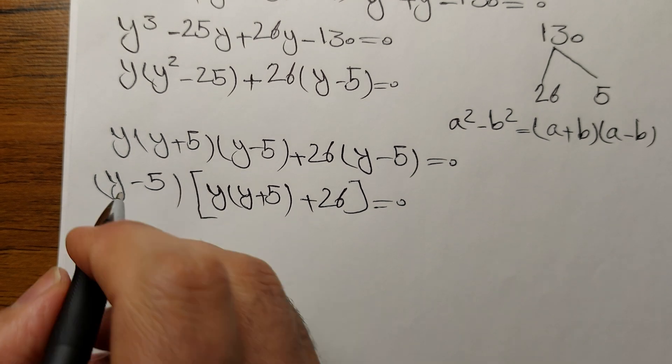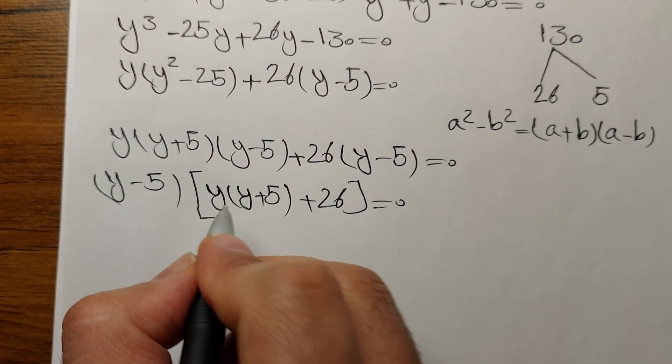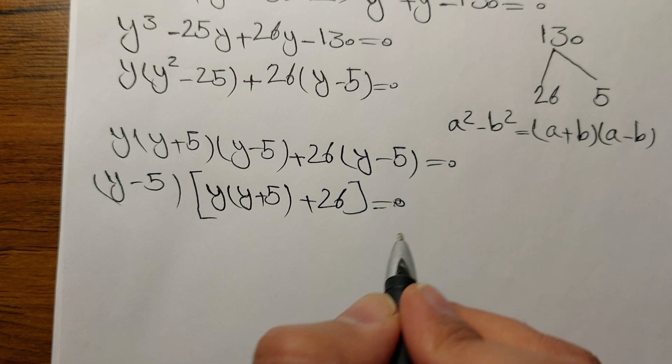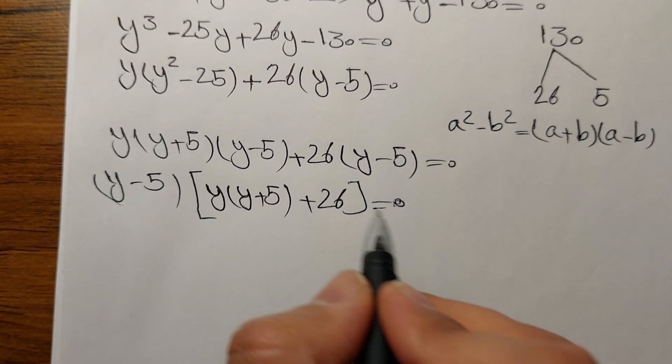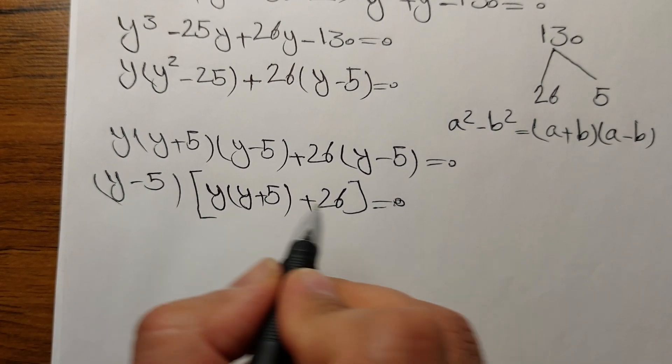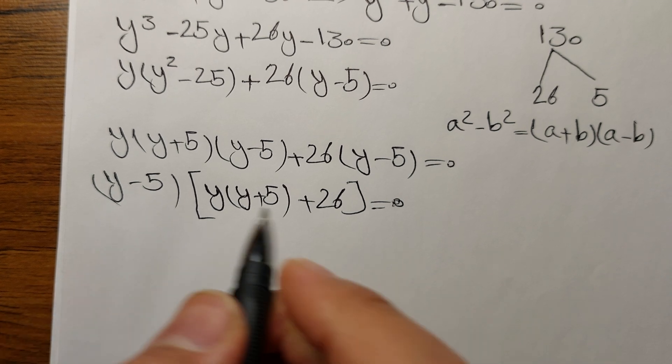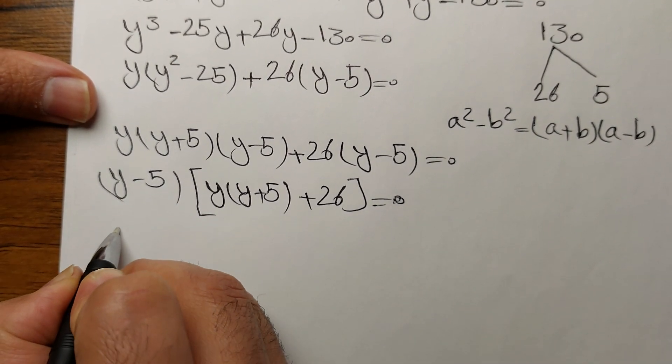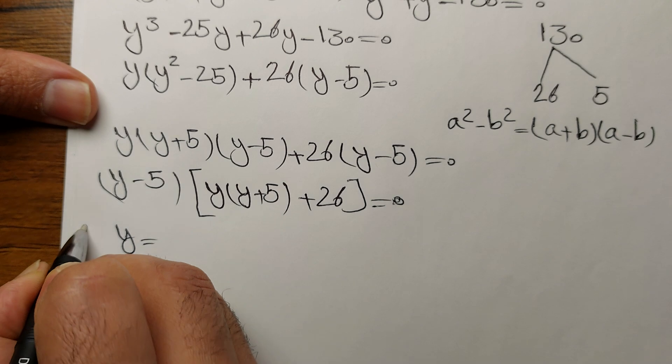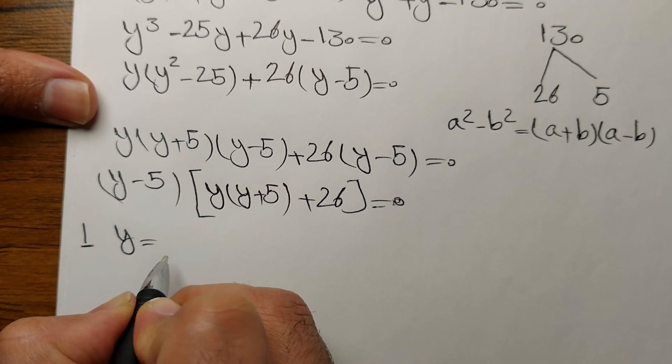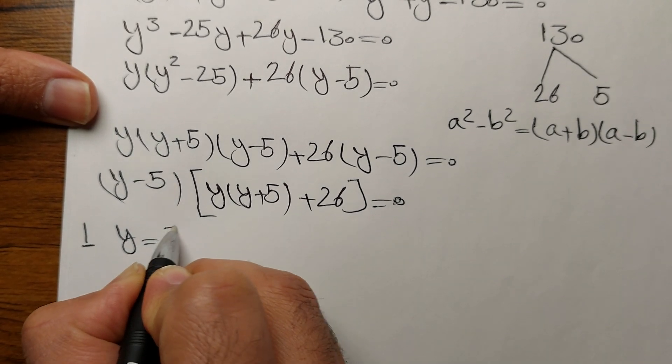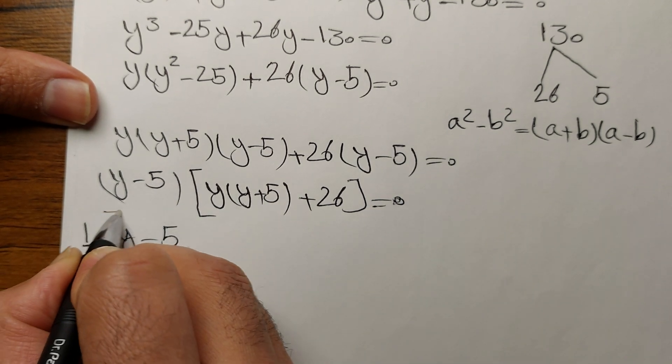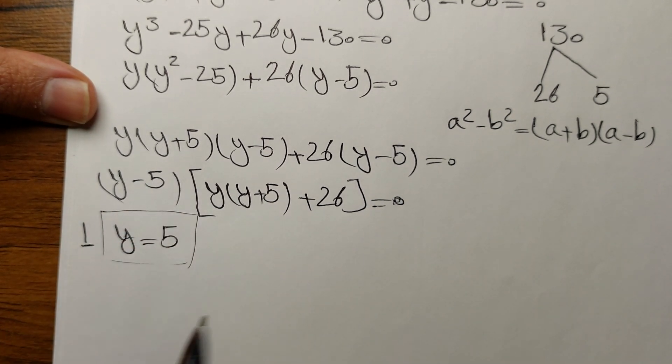We can rewrite it as y minus 5 in the brackets times y times y plus 5 plus 26 equals 0. So now it's way easier. We have two products, two entities, the product of which is 0. Whenever we have such a relationship, each of those must be 0. So either this is 0 or this is 0. One solution: y minus 5 equals 0, so y equals 5.